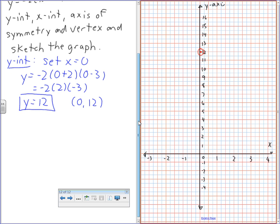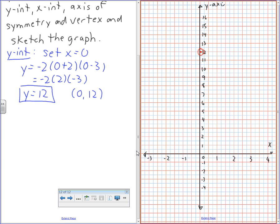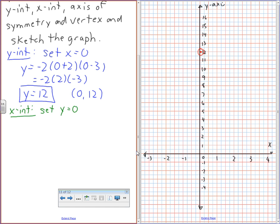To get my x-intercepts now, I'm going to do the same thing in green. So x-intercept is going to be set y equals 0. So 0 equals negative 2x plus 2x minus 3. Here we have x plus 2 equals 0. Here we have x minus 3 equals 0. So you have x equals negative 2, and you have x equals 3.